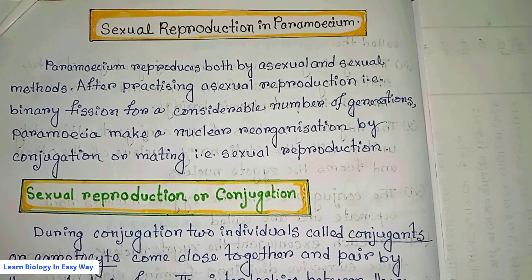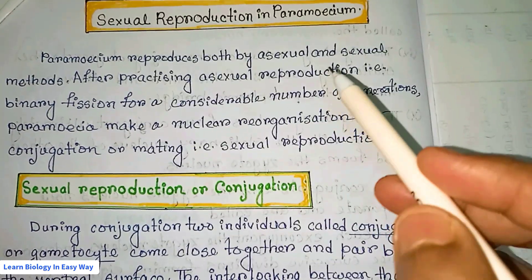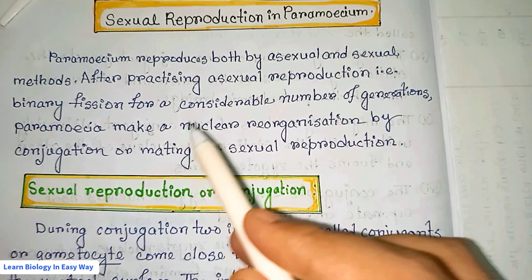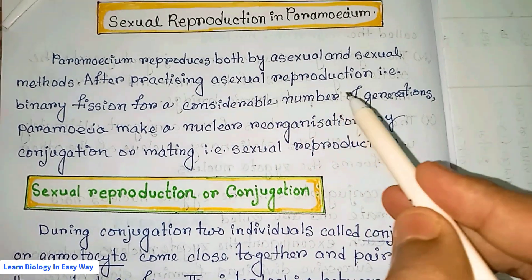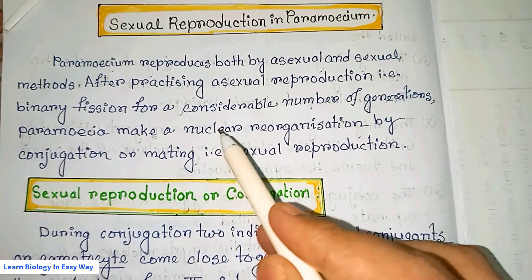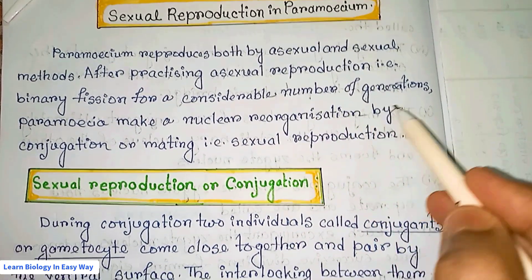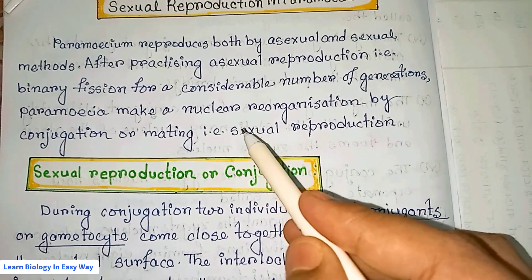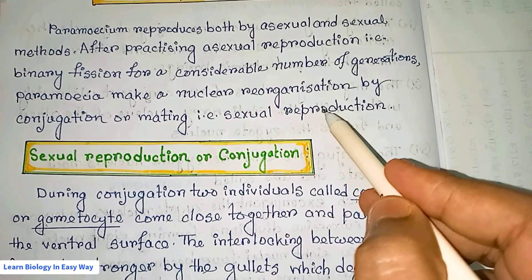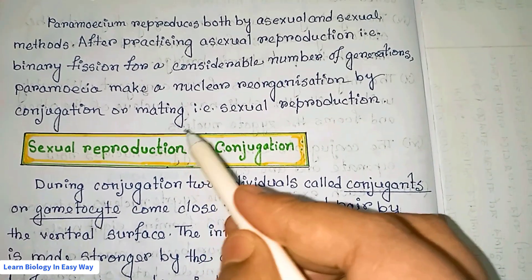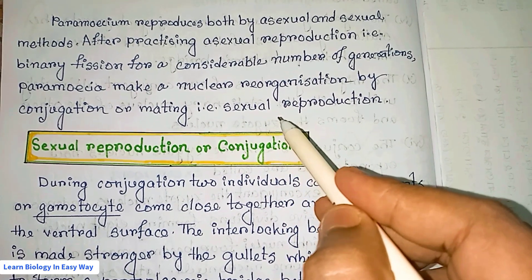Paramecium reproduces both by asexual and sexual methods. After practicing asexual reproduction — that is binary fission — for a considerable number of generations, paramecium undergoes nuclear reorganization by conjugation or mating, i.e., sexual reproduction.